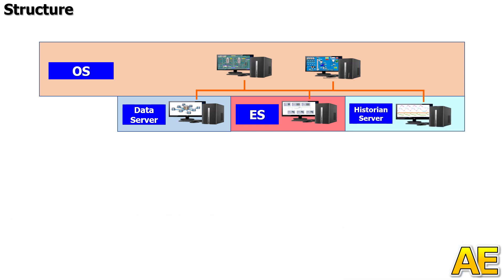The third component is the Historian Server. This can be a server or computer with the function to store historical data that can be used for trends or as a tool to improve operations.